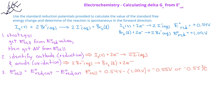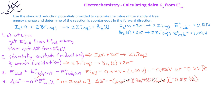Now that we have the standard cell potential, we can find the standard free energy change using ΔG° equals minus nF multiplied by the standard cell potential. From the half reactions, we see that two electrons are transferred, so n equals 2. Plugging in the values, we get negative 2 moles of electrons times 96,485 coulombs per mole of electrons multiplied by negative 0.55 joules per coulomb. The coulombs and moles of electrons cancel, and the standard free energy change is positive 1.1 × 10⁵ joules.